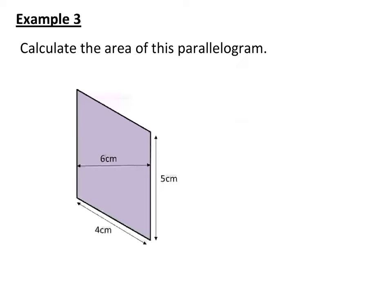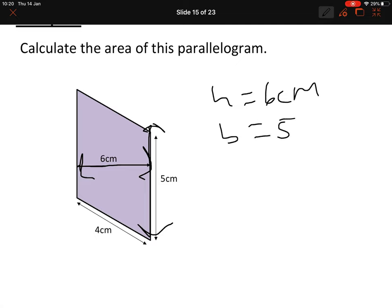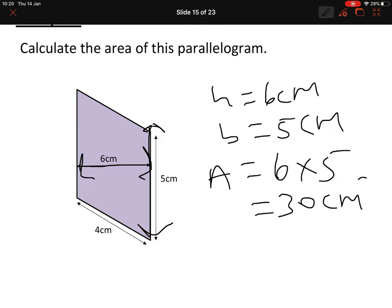Copy down this next example. This parallelogram has been tilted, so it's important to identify the base and perpendicular height. The height is 6 cm. The base meets the height at a right angle, and that measurement is 5 cm. So area = base × height = 5 × 6 = 30 cm².